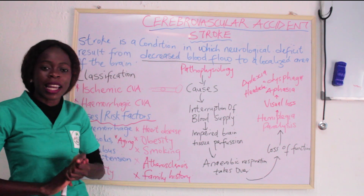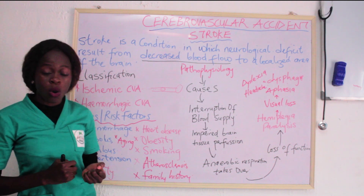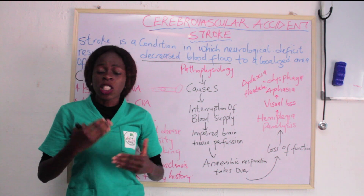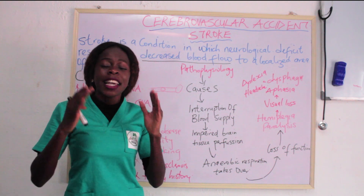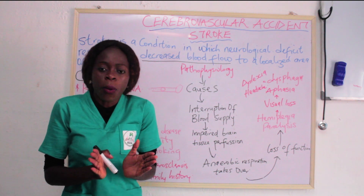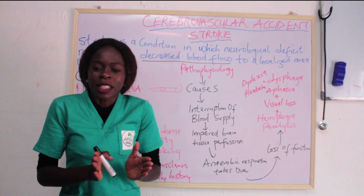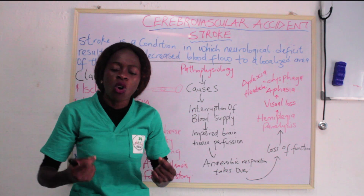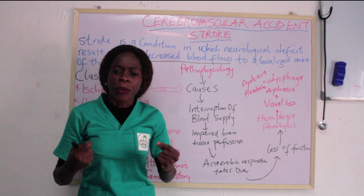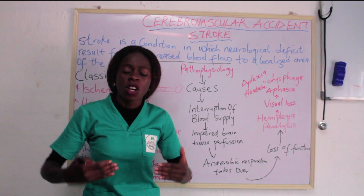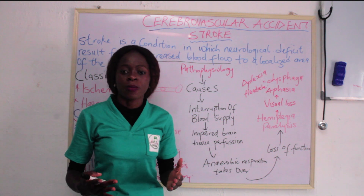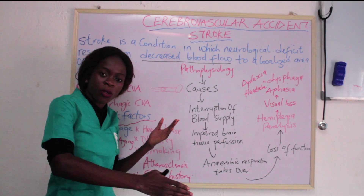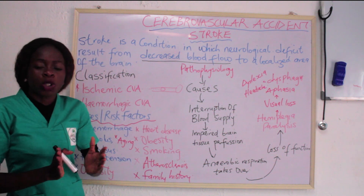The second classification is hemorrhagic CVA. As the name implies, hemorrhagic means there is bleeding. In hemorrhagic CVA, there is a rupture of the blood vessel, and when there is rupture it leads to bleeding. When there is bleeding, that particular area of the brain will not be getting enough blood, oxygen, or nutrients. Take note: in ischemic CVA there is an obstruction of the vessel, but in hemorrhagic CVA there is a rupture and bleeding.